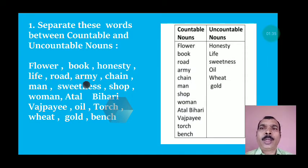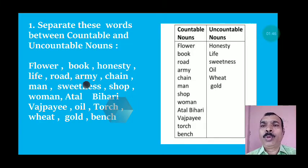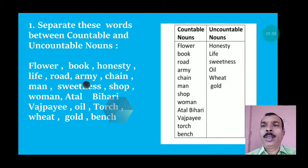Countable nouns are: flower, book, road, army, chain, man, shop, Bowman, Atal Bihari Vajpayee, torch, bank. And uncountable nouns are: honesty, life, sweetness, oil, wheat, gold.